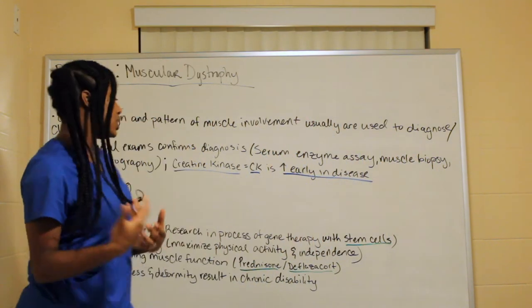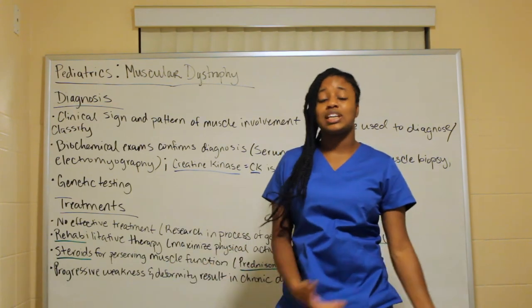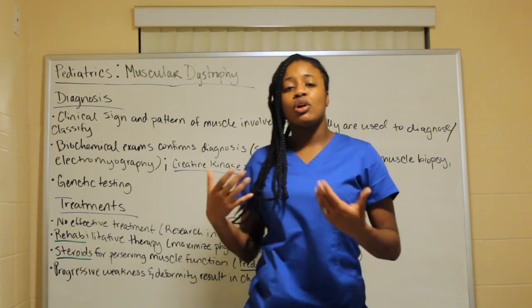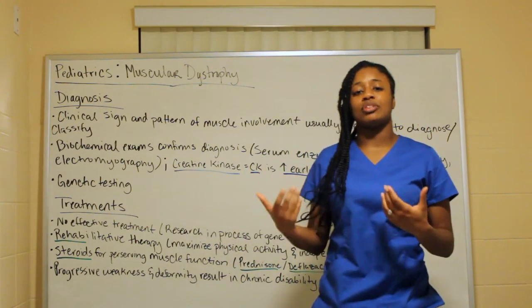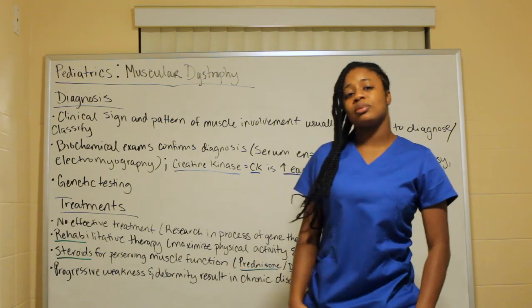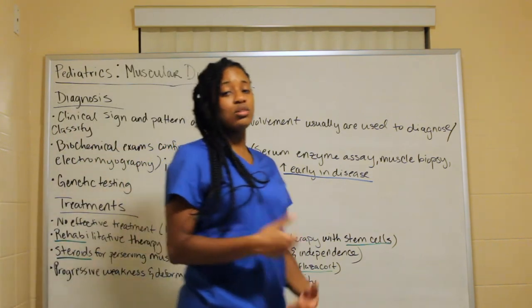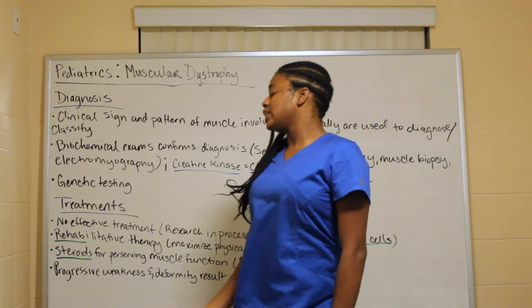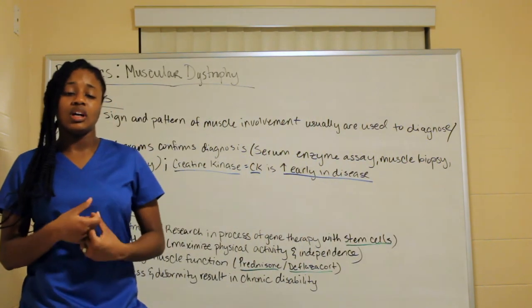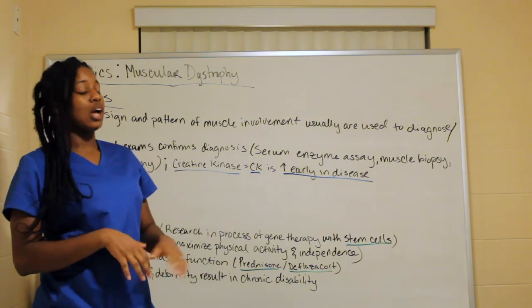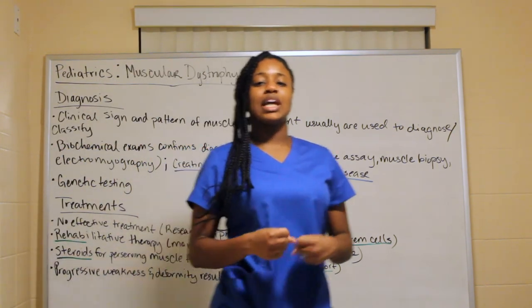Rehab therapy is used to maintain and stabilize existing function, and to help children be as independent as possible — letting them run, jump, kick, and play safely. Steroids such as prednisone and deflazacort are used to preserve muscle function. Ultimately, the progression of weakness and deformity results in chronic disability, but the goal is to prolong and maintain whatever muscle strength can be obtained.